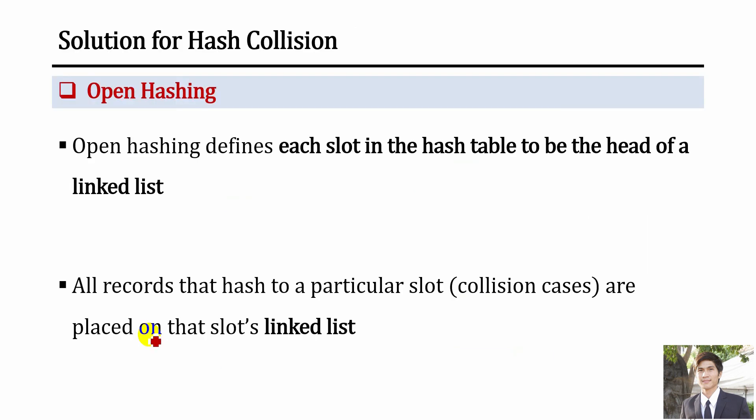In open hashing, each slot in the hash table is defined as the head of a linked list. Every element inserted into a slot becomes part of that list. Our data structure is therefore an array of linked lists — instead of an array of numbers, we have seven slots, each slot being a linked list. All records that hash to a particular slot are placed on that slot's linked list, so new data is inserted at the end of the list without overriding existing data.